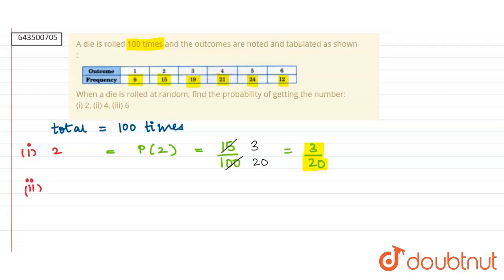In the second part, we have to find the probability of getting number 4, which will equal P(4). This implies this will equal 21 upon 100, and this is the answer for our second part.